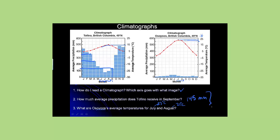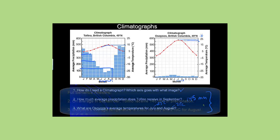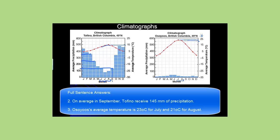If answering these questions on assignment, please make sure to answer them in full sentences, so that from your answer, we could tell what the question was. A sentence such as, Osoyoos's average temperature for July is 23 degrees Celsius, and for August is 21 degrees Celsius would be fine.